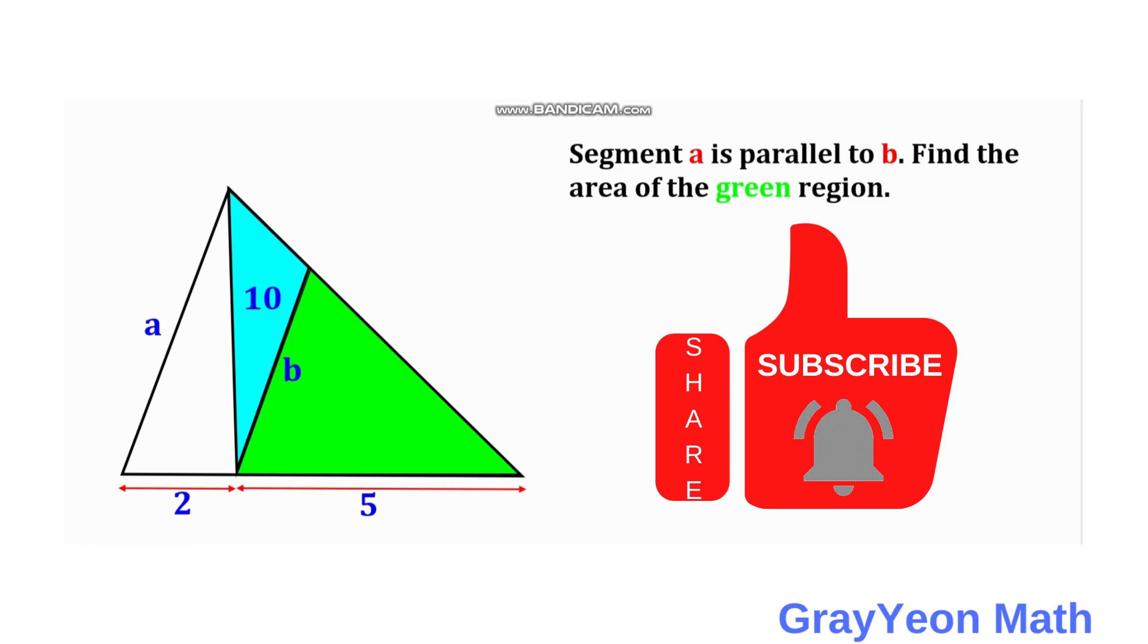One part of this triangle is blue and measures 10 square units, and we are required to find the area of the green region.